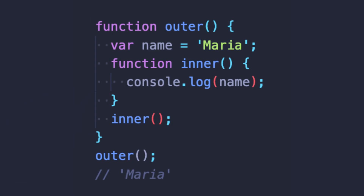I think the easiest way is to show you an example. In the code that you can currently see on the screen, you have an inner function and an outer function. When we call the outer function, the console log from the inner function will return the value of our variable defined in the outer function, and the result will be the name Maria.